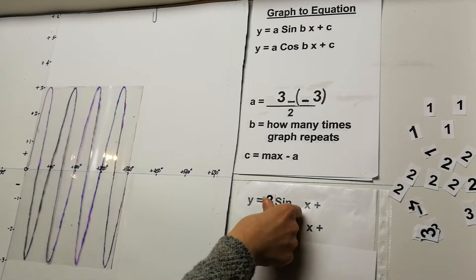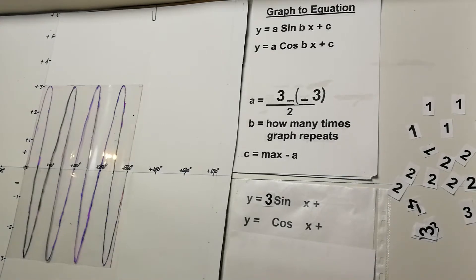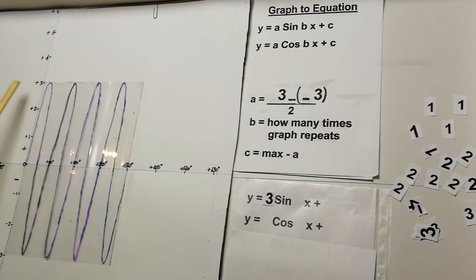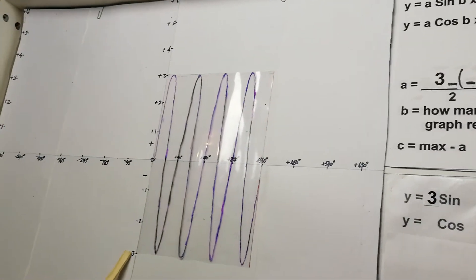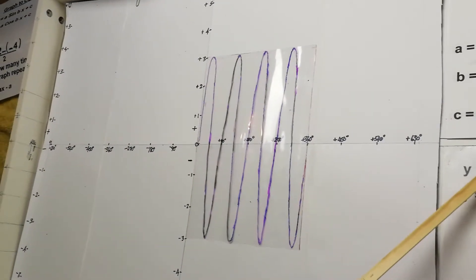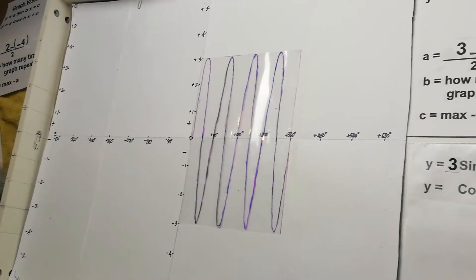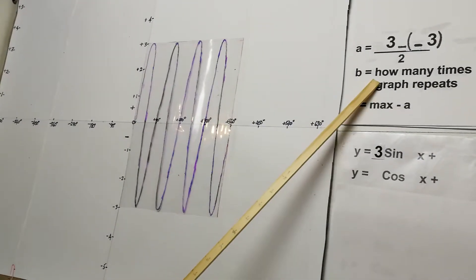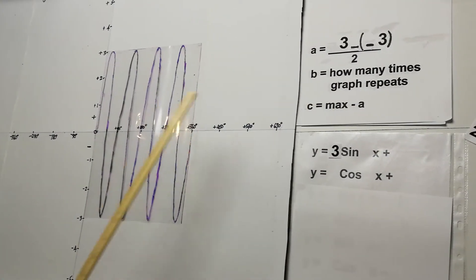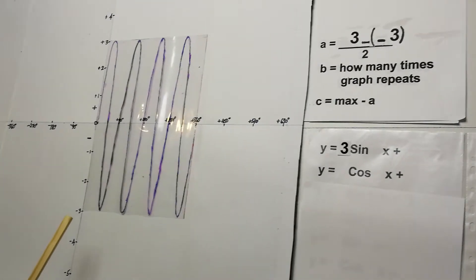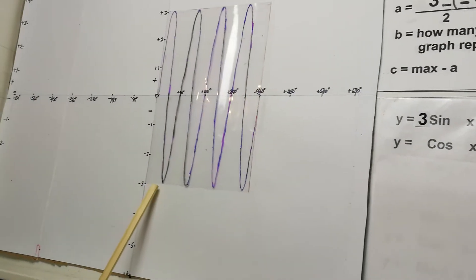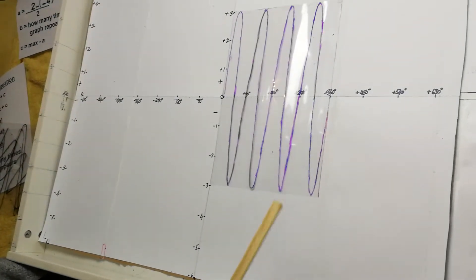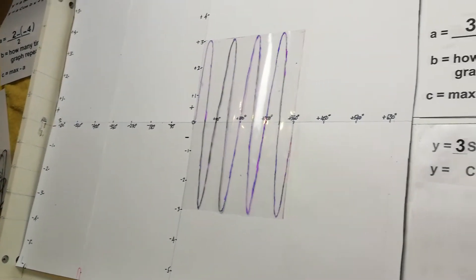It's worth noting that when the maximum and minimum are the same number — here both are 3 — the a value is simply that number. For b, the graph touches the bottom 1, 2, 3, 4 times, so b = 4.